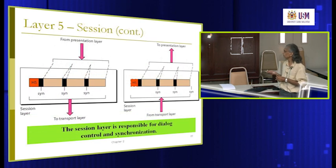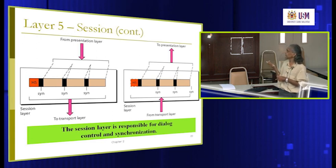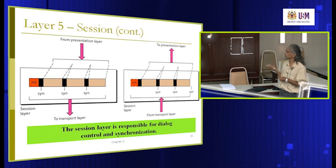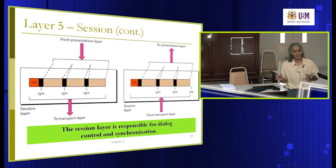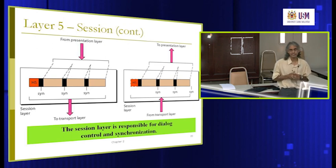So the session layer is responsible for dialogue control and synchronization. On the receiver side, each layer will check its own header. When data is received from the transport layer on the receiver side, it checks the header and makes sure all synchronization points have been achieved. Only then is the data passed to the upper layer — once everything is confirmed and synchronization is correct.